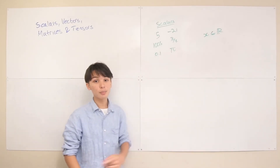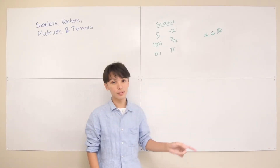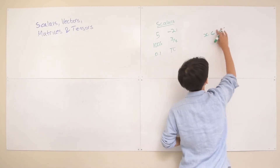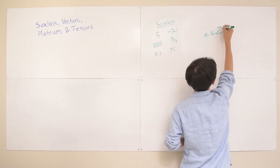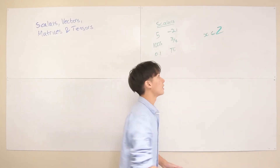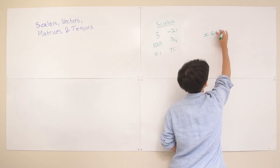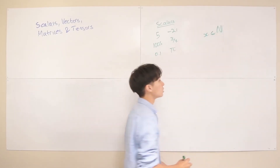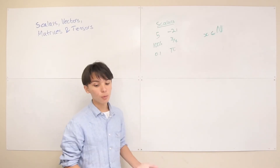The real numbers means any number you can put on a number line from negative infinity to positive infinity. You'll also see other variations: x has to be a member of the set of integers, represented with ℤ, or sometimes x has to be part of the set of natural numbers, which is ℕ — simply just counting numbers: 1, 2, 3, 4, et cetera.